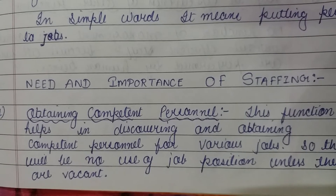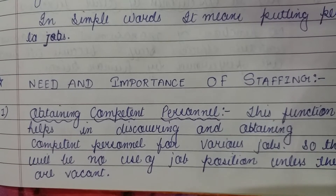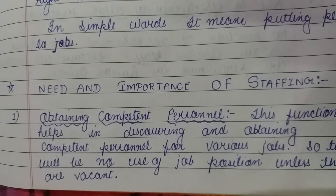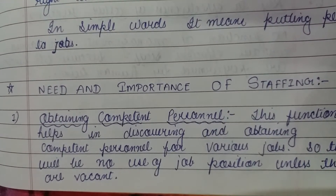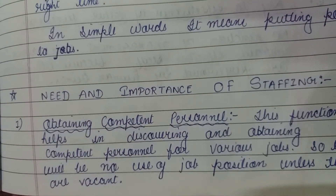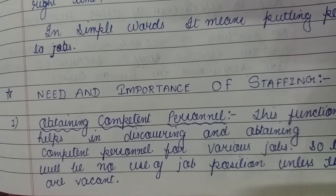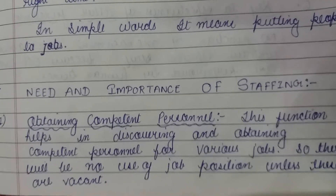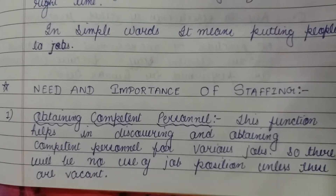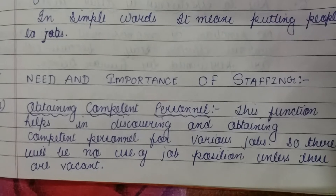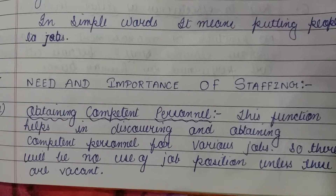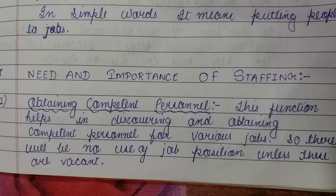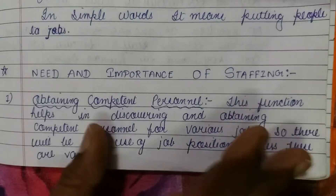हमारी organization में job position का जब तक कोई use नहीं होता है, जब तक हमारे perfect employees select नहीं किए जाते. उन job positions को जब तक perfect employees के साथ fill नहीं किया जाता, staffing function के through हम different employees को appoint करते हैं और अपनी vacant job को fill करते हैं. हम obtain करते हैं कि हमें कितने competent persons की need होगी. Staffing function के through, हम organization में different competent persons को select करके उन vacant jobs पर fill out करते हैं. इसीलिए obtaining competent person is most important for organizing.